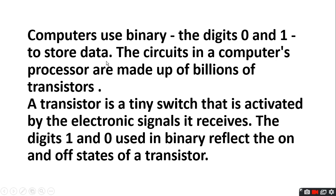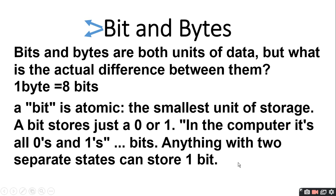The circuits in a computer processor are made up of billions of transistors. A transistor is a tiny switch that is activated by the electronic signal it receives. Aur woh kab activate hoti — jab usko electronic signal milta. The digits 1 and 0 used in binary reflect the on and off state of the transistor. On means 1 and off means 0.